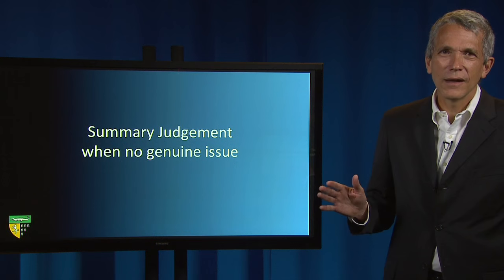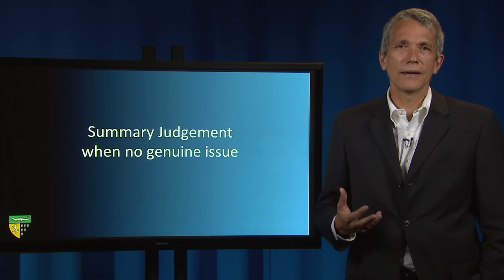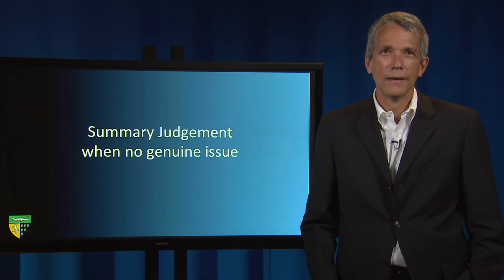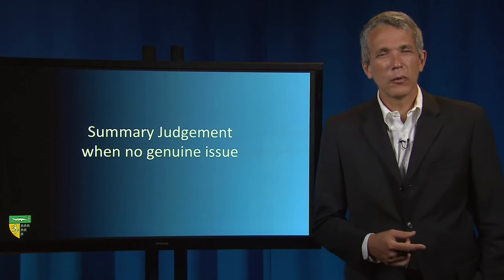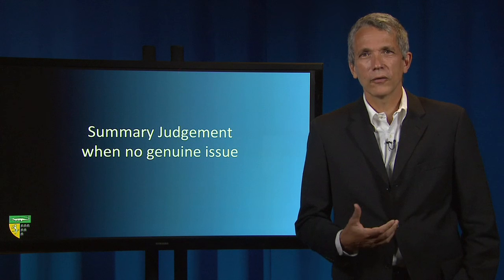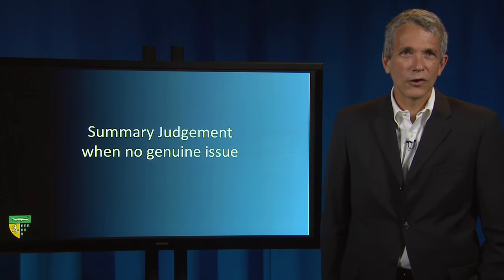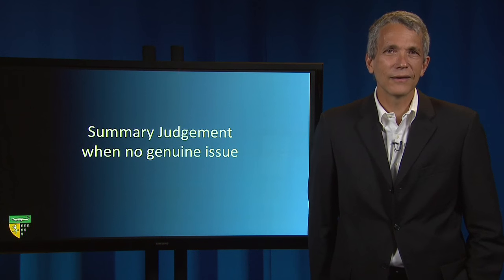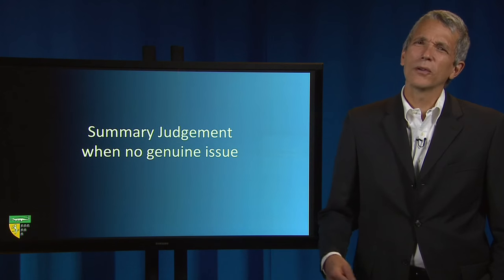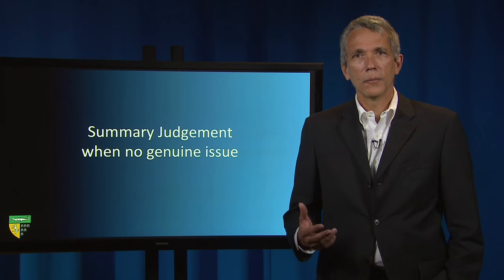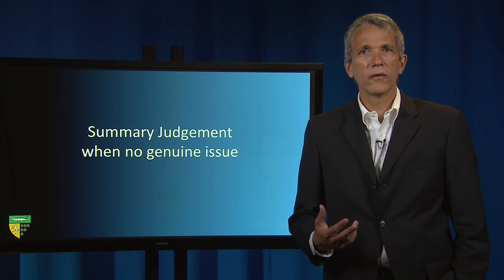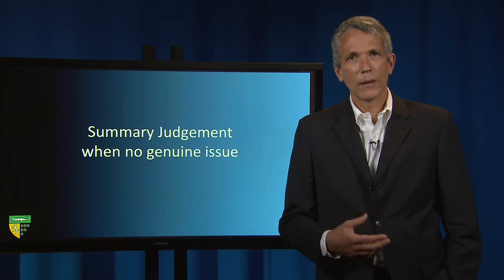Imagine that a civil plaintiff has satisfied the burden of allegation by satisfactorily making allegations with regard to the requisite elements in her complaint. Then, at the close of discovery but still before trial, the defendant can move for summary judgment if the defendant can show that the plaintiff has failed through discovery to produce sufficient evidence to show that a genuine issue of material fact exists with regard to one of the elements the plaintiff has the burden of establishing at trial. Summary judgment can also be brought by the plaintiff with regard to issues that it bears the burden of establishing at trial, and with regard to affirmative defenses that the defendant has the burden of persuasion of establishing at trial.